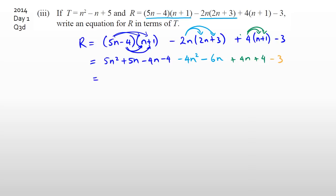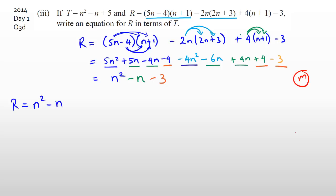For a merit, you need to simplify by collecting like terms. 5N² minus 4N² is N². Then looking at the N terms: 5N minus 4N minus 6N plus 4N gives negative N. For the constants: negative 4 plus 4 is 0, leaving negative 3. So the fully simplified expression is R equals N² minus N minus 3. Getting to this fully simplified form gets you a merit.